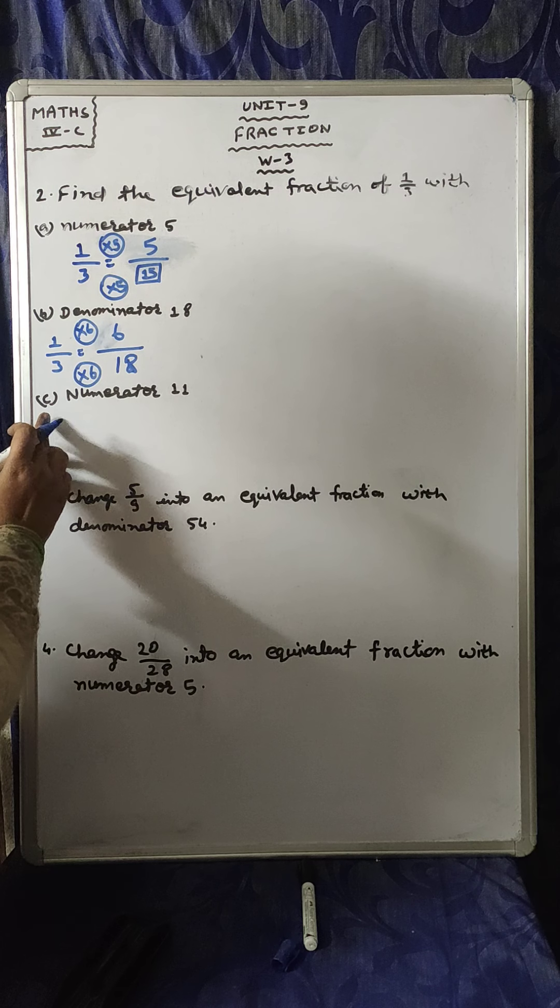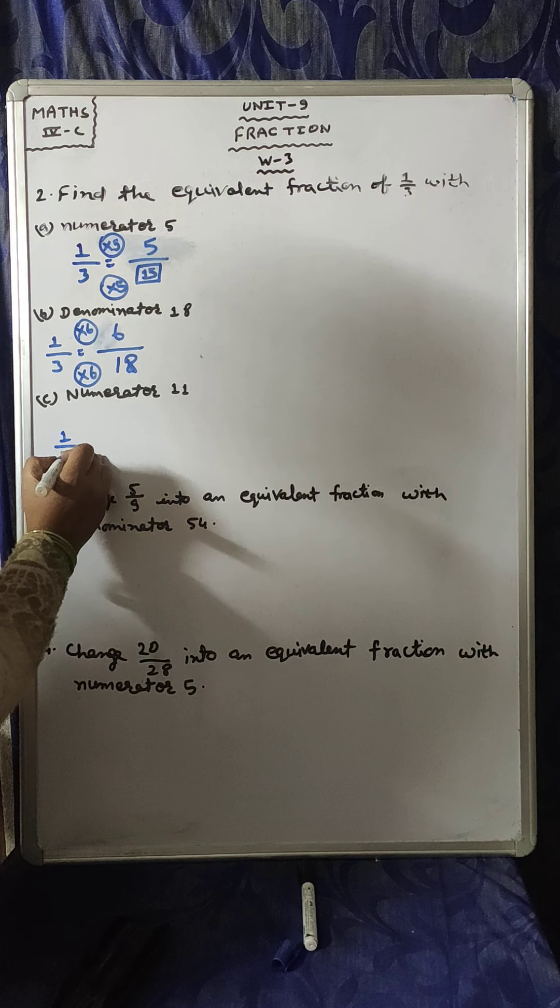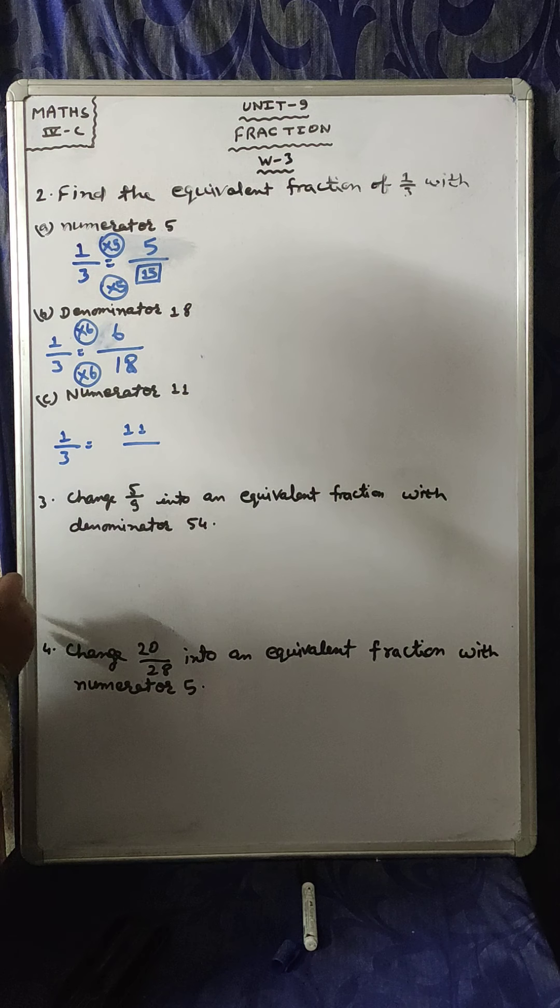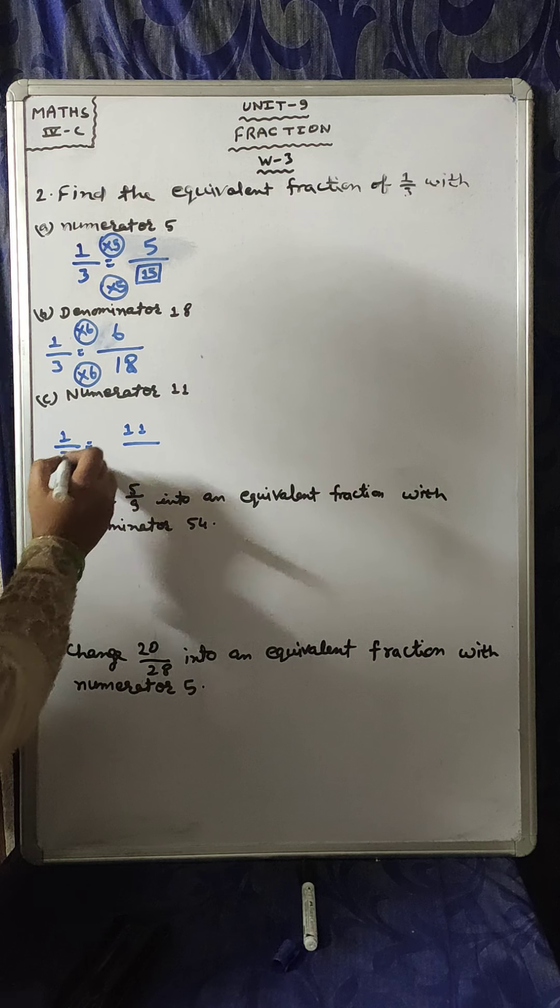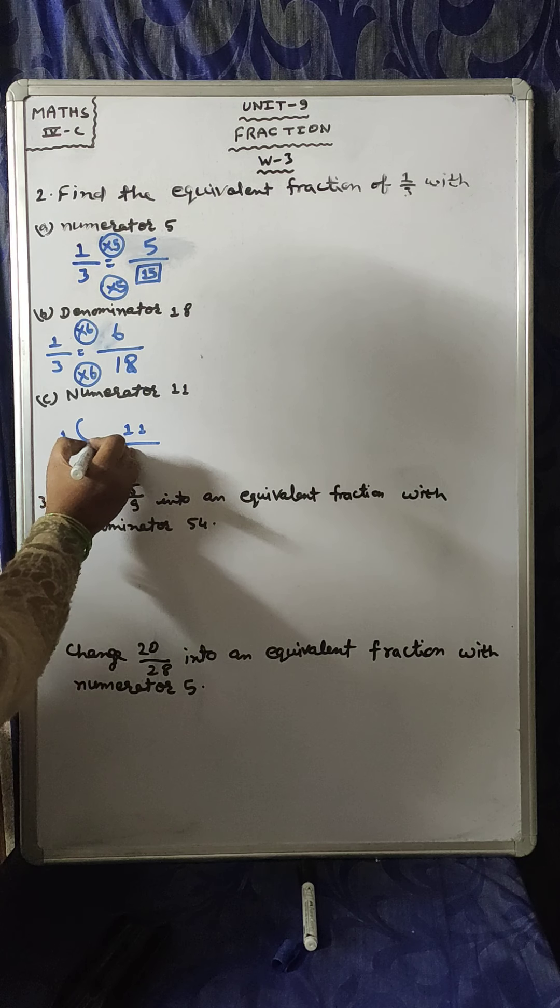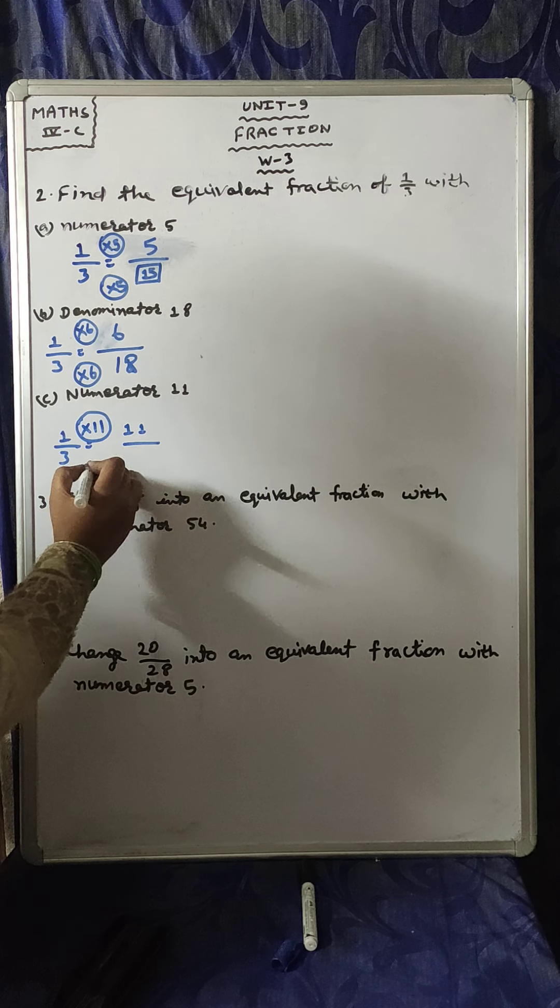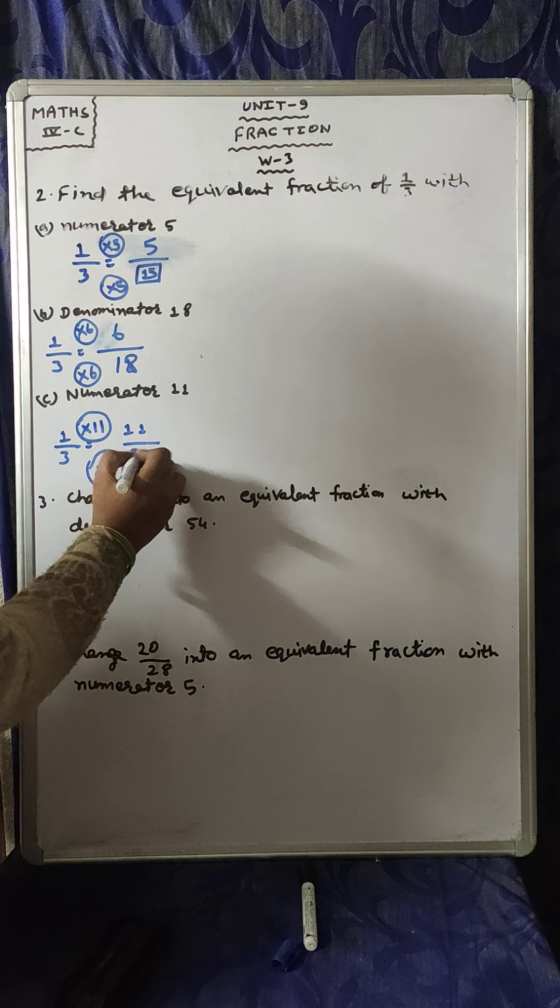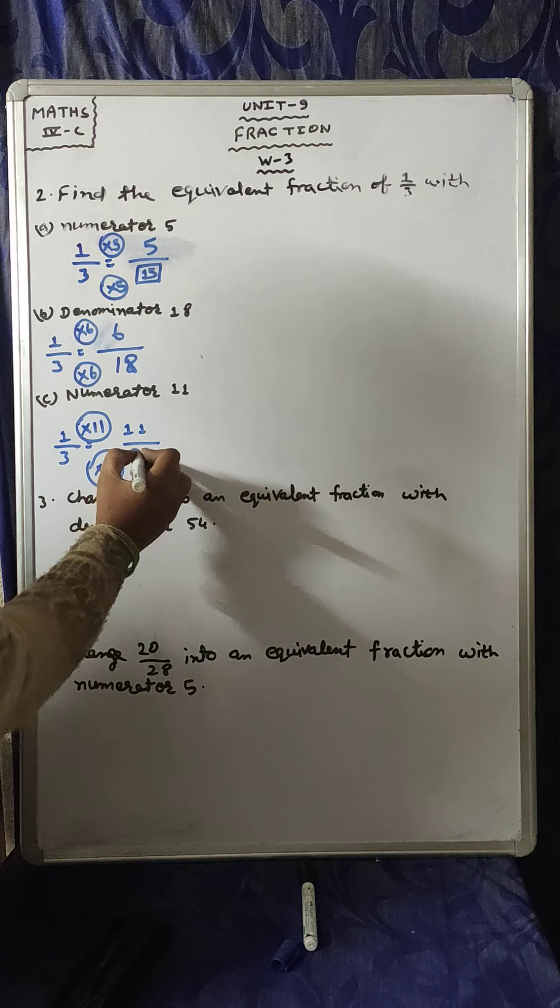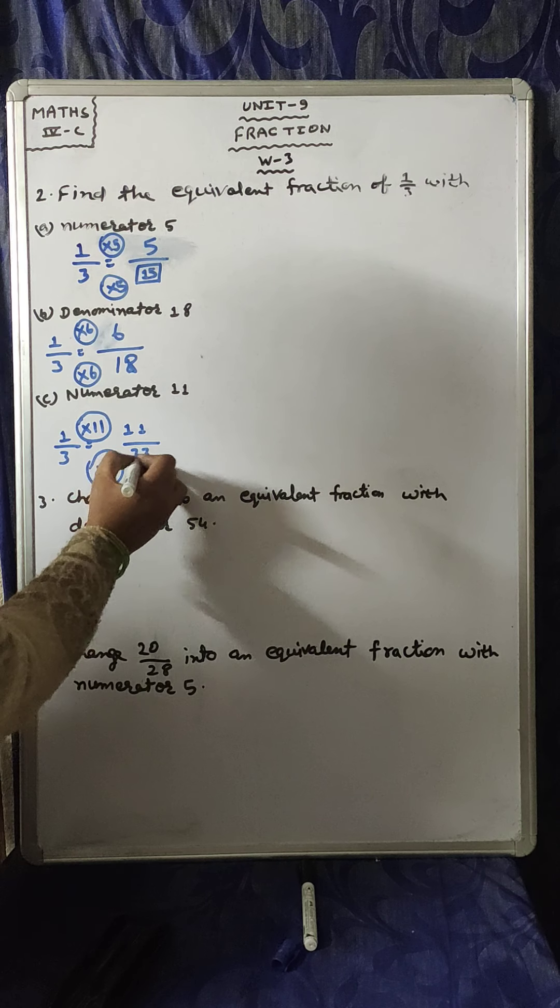Next, part C. The numerator is 11, and the fraction is 1/3. The numerator is 11. 1 times 11 is 11, and 3 times 11 is 33. 11 is 11 times 1, and 33 is 11 times 3. 1 times 11 is 11, and 3 times 11 is 33.